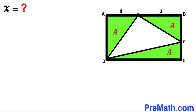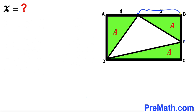In other words, if the area of this triangle is A, then the area of the other triangle is A, and this is A as well. Moreover, this segment AE is 4 units, and this segment EB is X. Our task is to find the value of this length X.